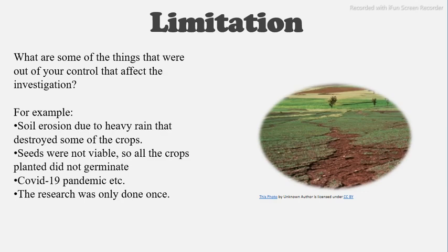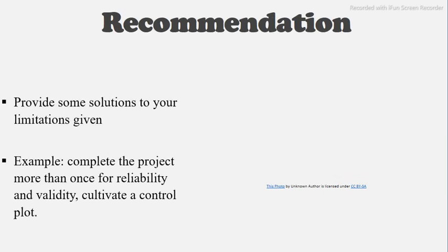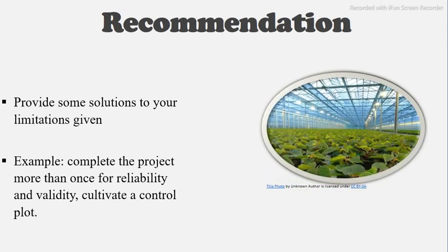Now you move on to your recommendations. For each limitation given, you provide a solution or recommendation. For example, you might want to complete the project more than once for reliability and validity, since it was only done once. Or you can cultivate a control plot and analyze the results — the control plot would have cucumbers grown with both organic and inorganic fertilizer, while you have another with just organic and another with just inorganic. You then analyze the results to see how valid and reliable they are.